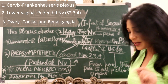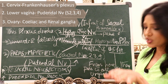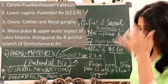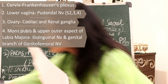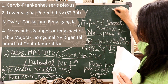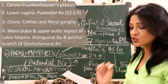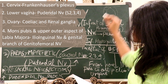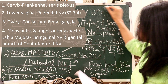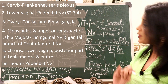Ovaries are supplied by the celiac and renal ganglia, and they follow the course of the ovarian vessels — just as the ovarian vessels correspond to the lumbar group of lymph nodes. The mons veneris, or mons pubis, and the upper and outer aspect of the labia majora are also supplied in this region.